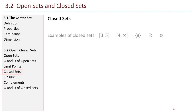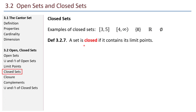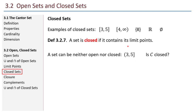Let's talk about closed sets. Here are some examples: the interval of all real numbers from 3 to 5 including 3 and 5; the interval from 4 to infinity including 4; just the singleton point 8; the set of all real numbers is closed; and the empty set is also closed. A set is closed if it contains its limit points — this is the definition of a closed set. A set can be neither open nor closed; for example, the interval that does not contain 3 but does contain 5 is neither open nor closed. What about the Cantor set? Is it open or closed? We'll see.